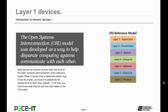It was developed as a way to help disparate computing systems to communicate with each other. The OSI reference model has seven layers. Layer 1 is the Physical Layer, Layer 2 is Data Link, Layer 3 is Network, Layer 4 is Transport, Layer 5 is Session, Layer 6 is Presentation, and Layer 7 is Application.